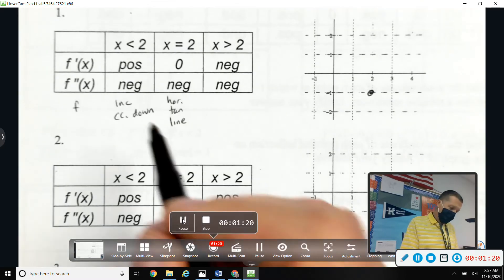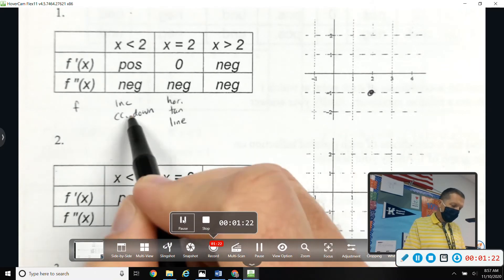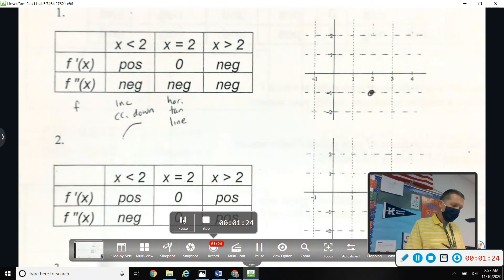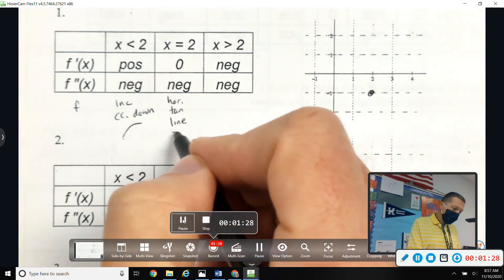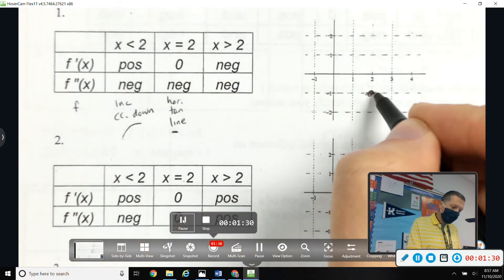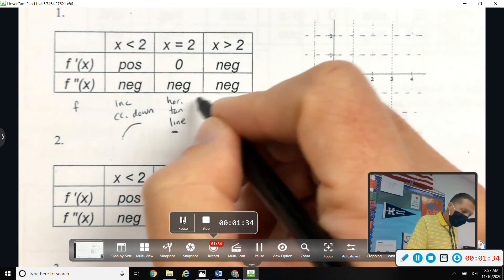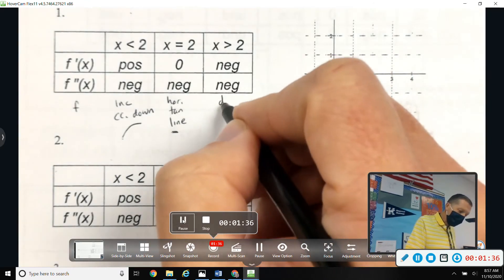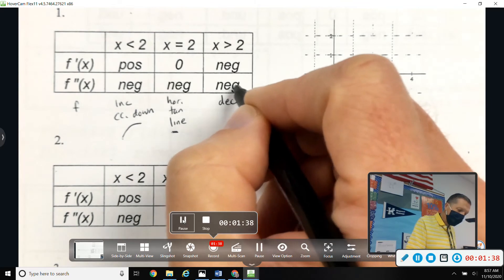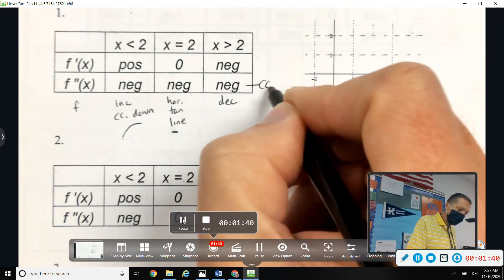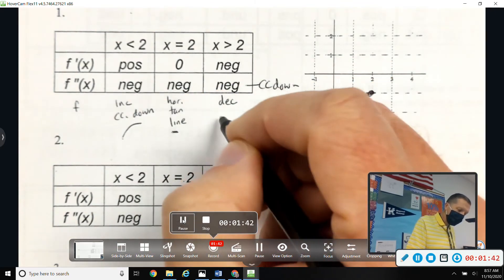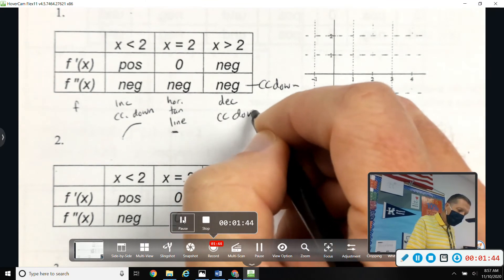Looking at number 1, if you drew little pieces down here, so increasing and concave down looks something like that. At x equals 2, there's a horizontal tangent line, so we should level out just briefly there. On the other side, because f prime is negative, we'll be decreasing. We're concave down the whole way, actually here.